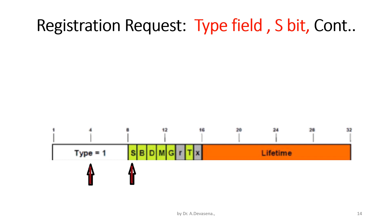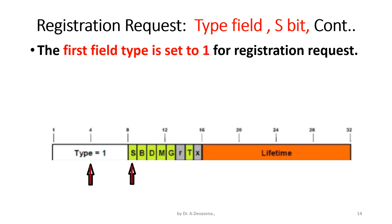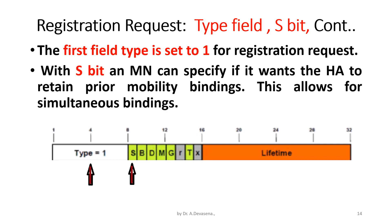The first field, type, is set to 1 for a registration request. With the S-bit, a mobile node (MN) can specify if it wants the home agent to retain prior mobility bindings, which allows for simultaneous bindings.